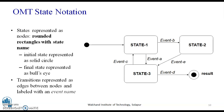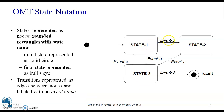The OMT state notations show states represented as nodes. The initial state is shown by a filled circle and the final state by two circles — one unfilled and one filled — also called the bull's eye. Rounded rectangles represent the states with the state name written inside. Transitions are represented as edges between the nodes, labeled with an event name, showing how the object moves from one state to another.